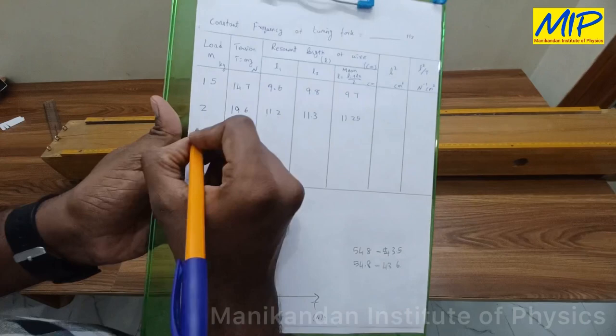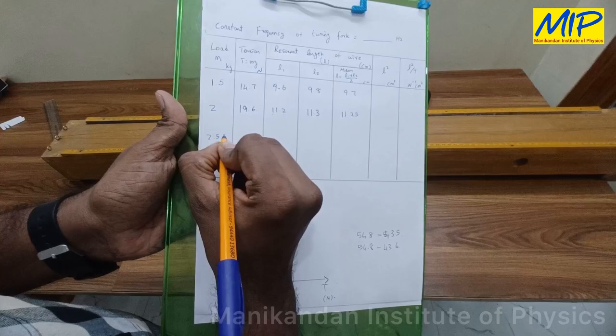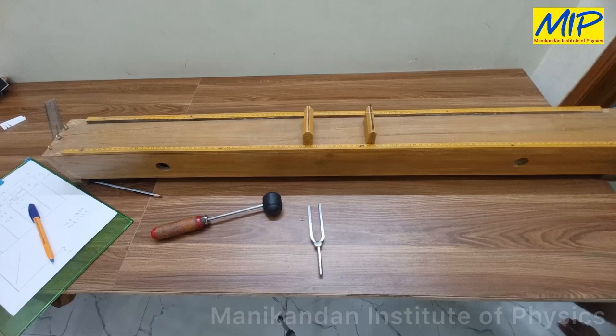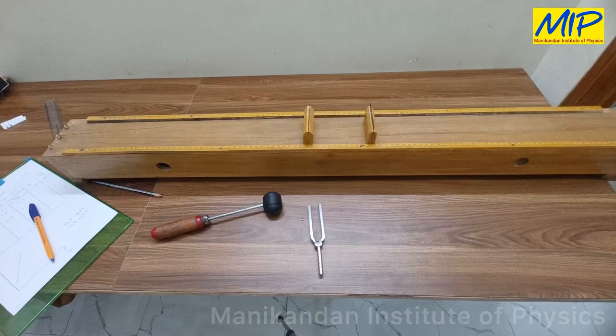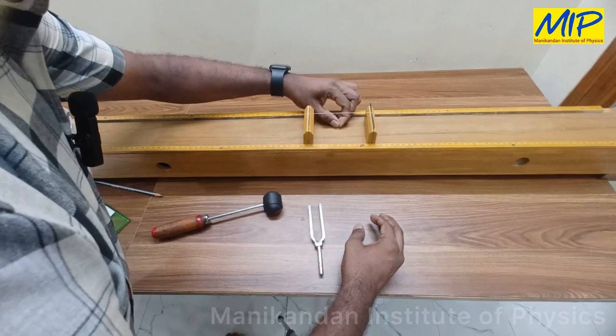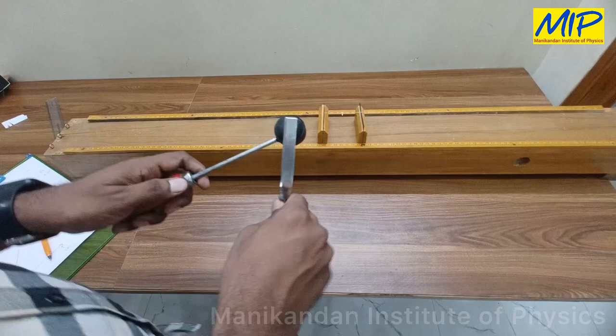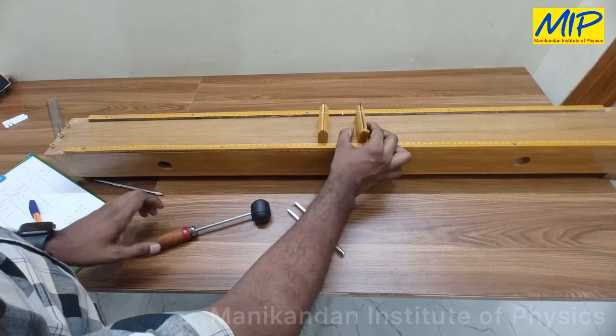Now I am going to increase the load to 2.5 kilograms by adding another 500 gram weight to the hanger. The tension in the string increases, so the balancing length will also increase. I place the rider and start increasing the length slowly.